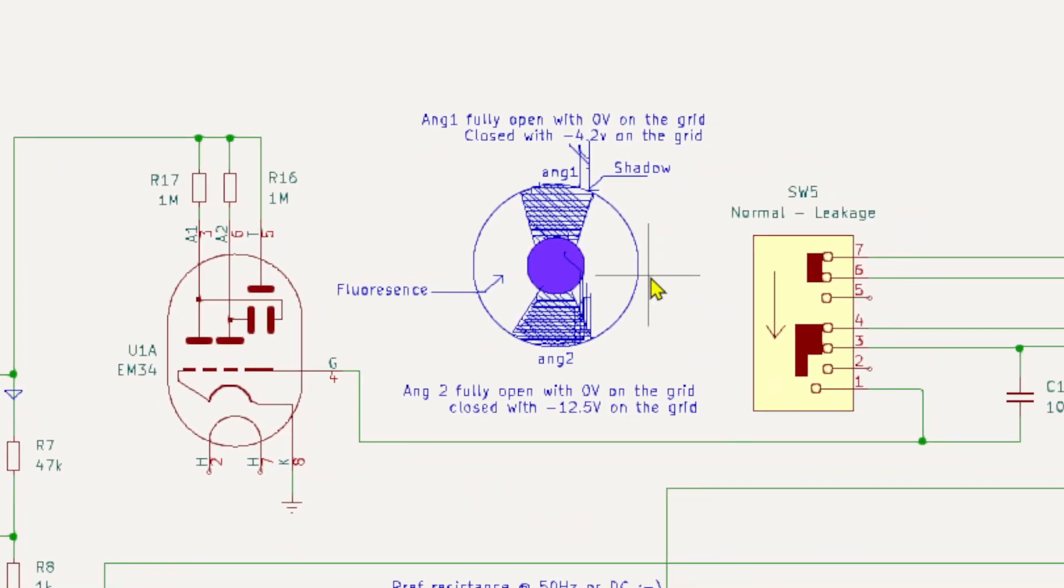You'll see that it says for the angle to be fully open on the grid you get 0 volts. To close the angle and close the eye for this one you need minus 4.2 volts, and for this one you need minus 12 volts to close it. Well what happens if it goes positive? It will try and open wider.